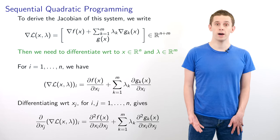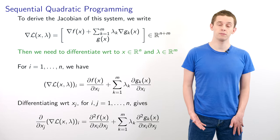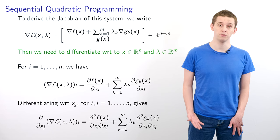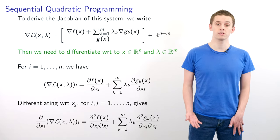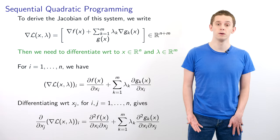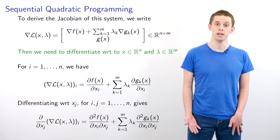For i from 1 to n we can write down that the i-th component of the gradient of L is equal to ∂f/∂x_i plus the sum from k=1 to m of λ_k ∂g_k/∂x_i.